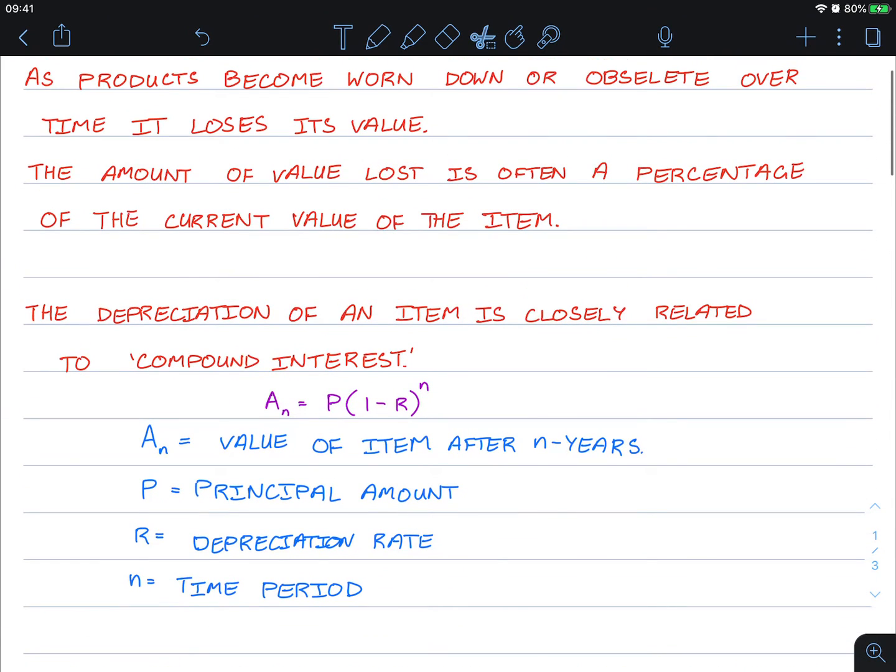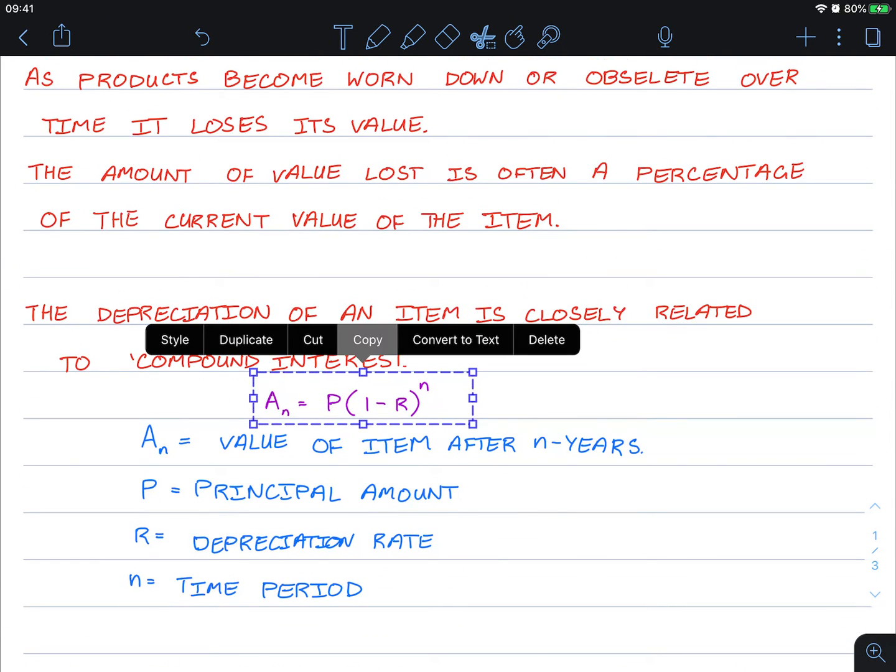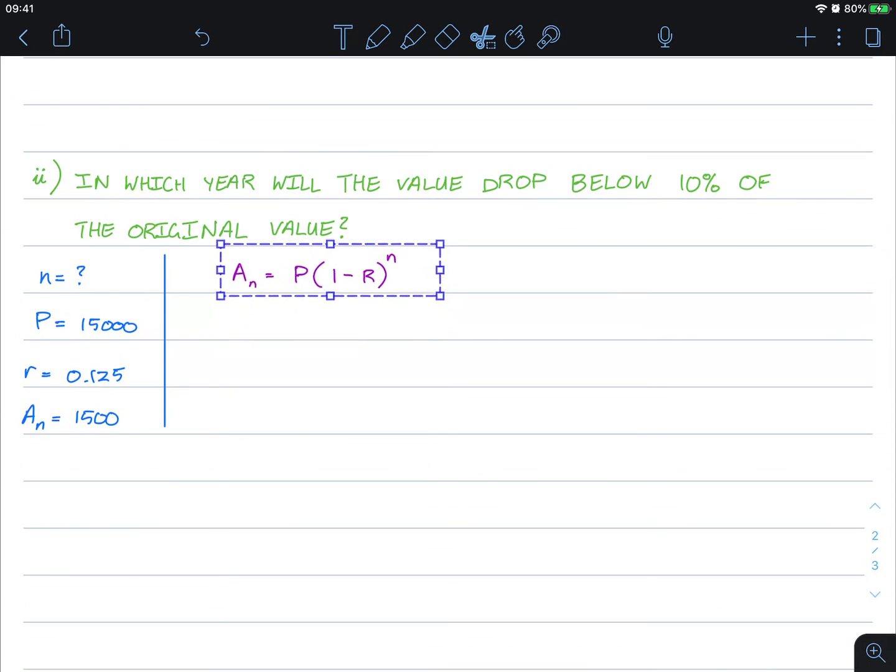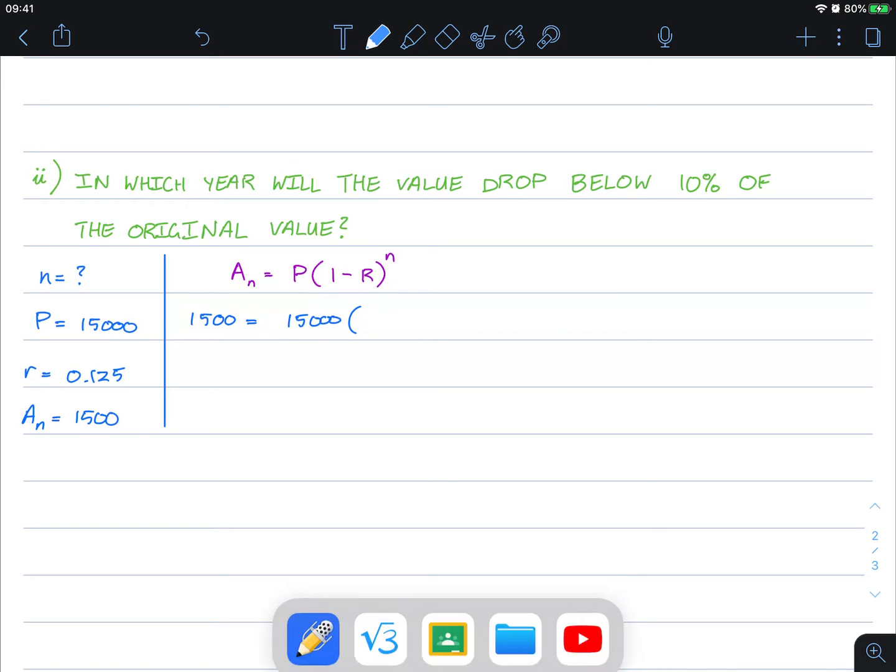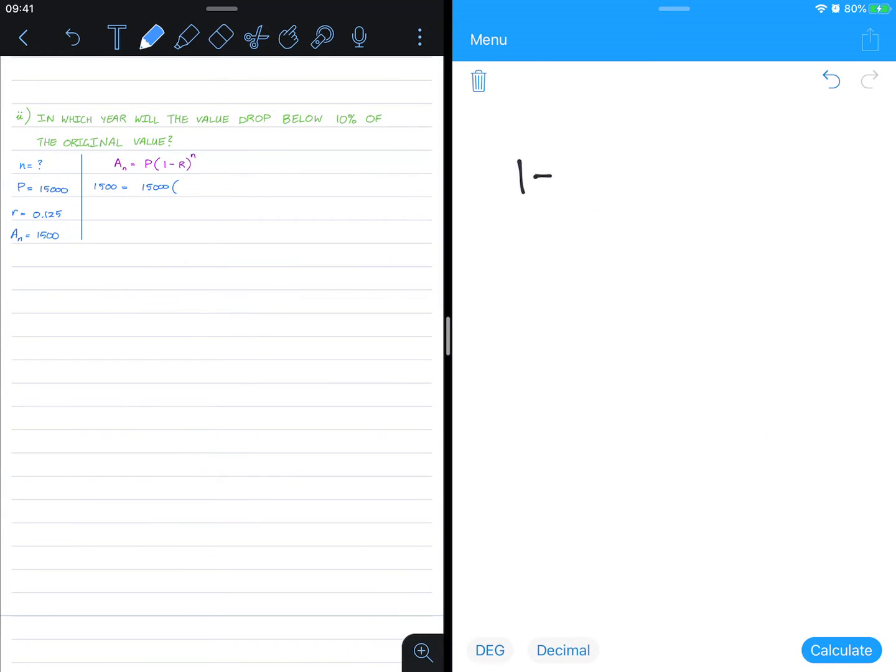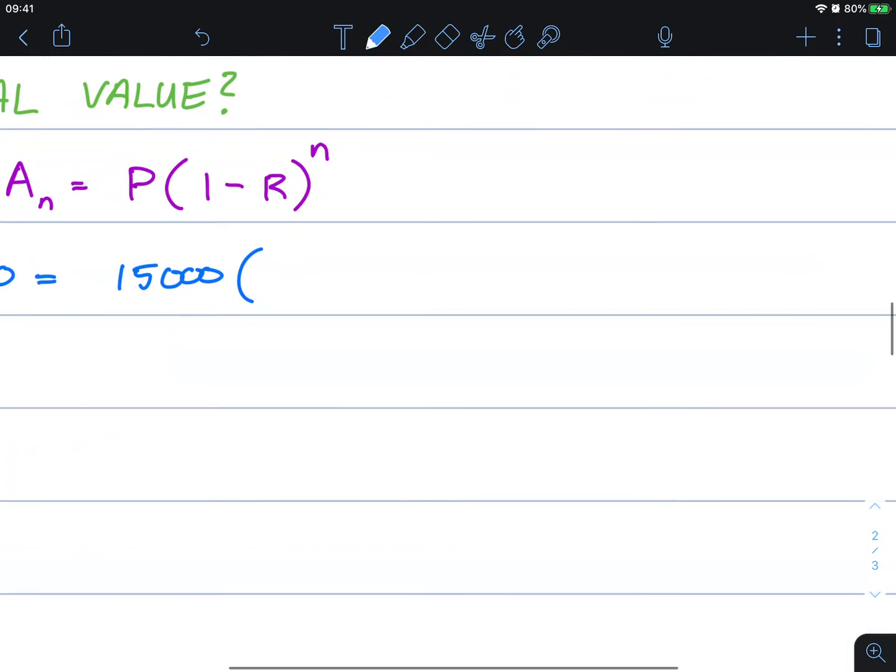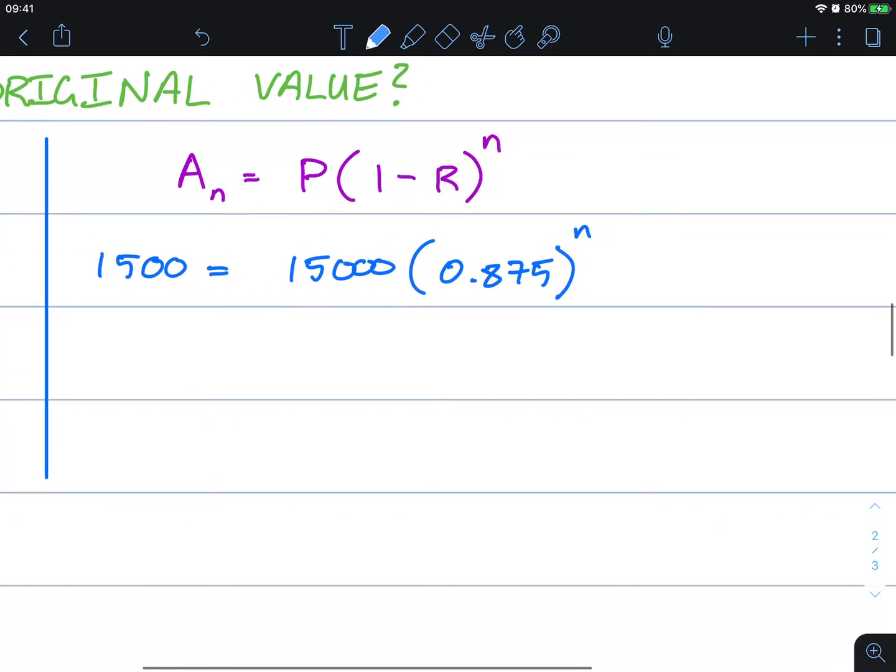Let me just copy-paste this, it makes it a lot easier. So we have A_n, we have our original value P, and 1 minus r. Let's actually quantify that: 1 minus 0.125, making it a little bit easier, 0.875 to the power of n. Okay.